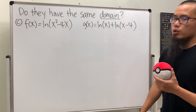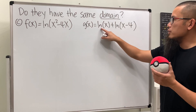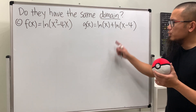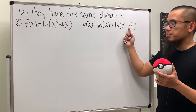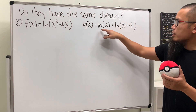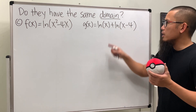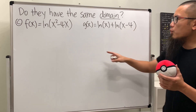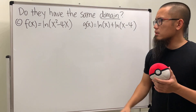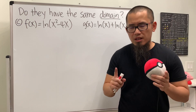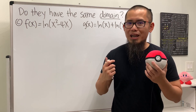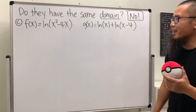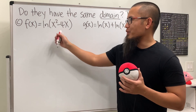For part c, g of x is ln x plus ln of x minus 4. Since we're adding two natural logs, we can use the log property and multiply the insides together to get ln of x squared minus 4x. Aren't they the same? Yes, only on their common domain — but they do not have the same domain, so this is also a no.